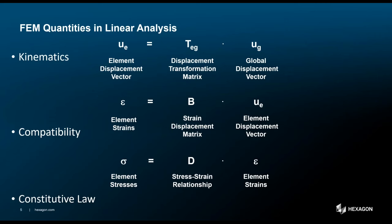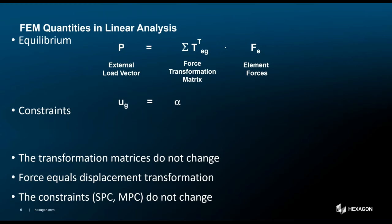In linear analysis, there's a real linear relationship between displacement degrees of freedom and other quantities such as element stresses. You can determine displacements of nodes in element coordinates by multiplying them by a transformation matrix. Element strains can be derived from element displacements via the stress-strain-displacement matrix, and those strains can be converted to stresses based on the material's constitutive law. Element forces can be converted back to the global coordinate system, and when summed they equal the applied loads. Importantly, all the matrices used for these transformations are constant and independent of load or displacement.